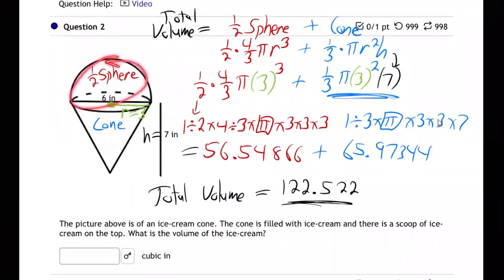So we just used, they said it's half a sphere, so we did half the sphere formula plus the cone formula, and then just plugged in. The radius was three because that's halfway across the circle, and the height is seven. There we go.